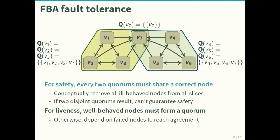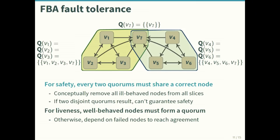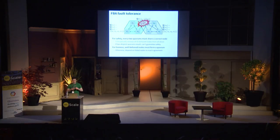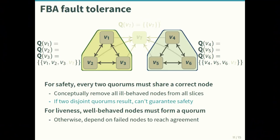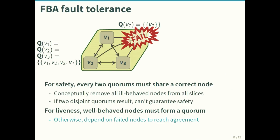The question is: when can you guarantee safety and liveness? Like in regular Byzantine agreement, any two quorums must share a non-faulty node. If quorum A and quorum B overlap only at a faulty node V7, that node can tell different things to each side. Conceptually, if you delete all misbehaving nodes from everybody's quorum slices and the remaining quorums don't overlap, you can't guarantee safety. For liveness, you similarly need at least one quorum of non-faulty nodes — if V1, V2, V3 are non-faulty but V7 is faulty and they're waiting on V7, liveness is broken.